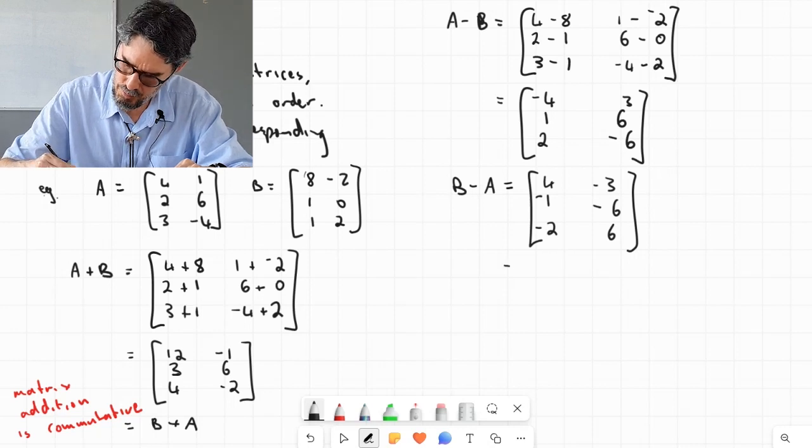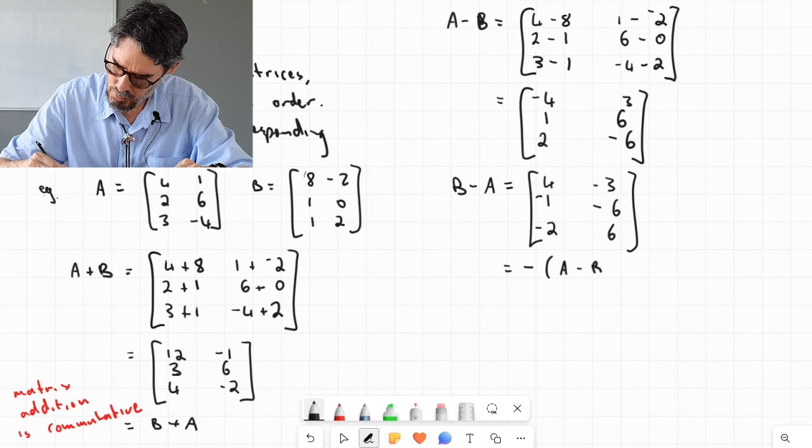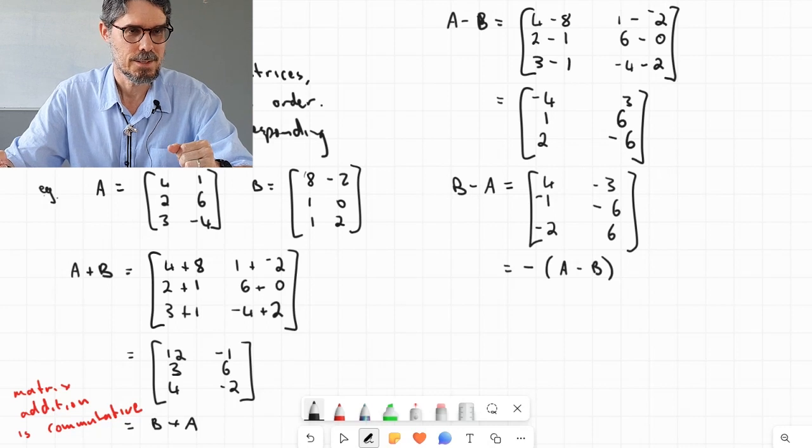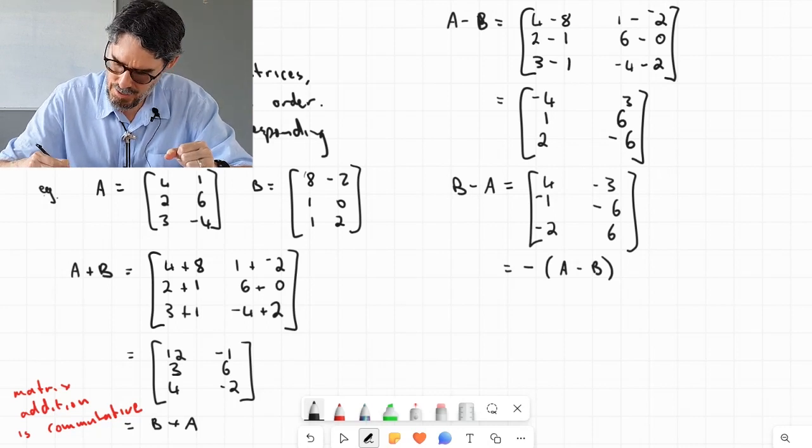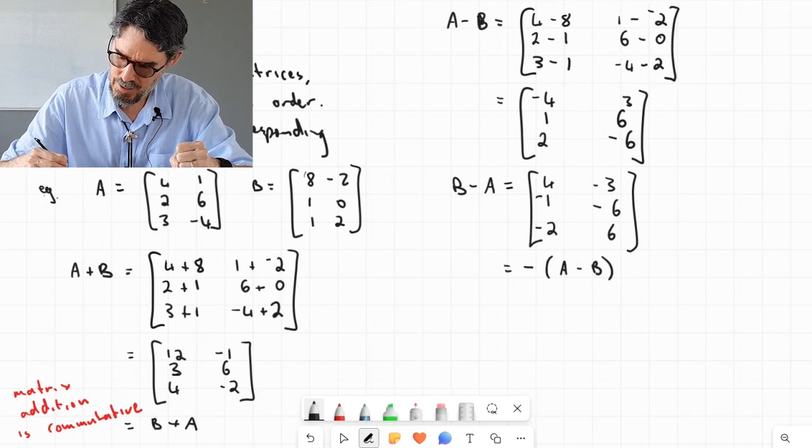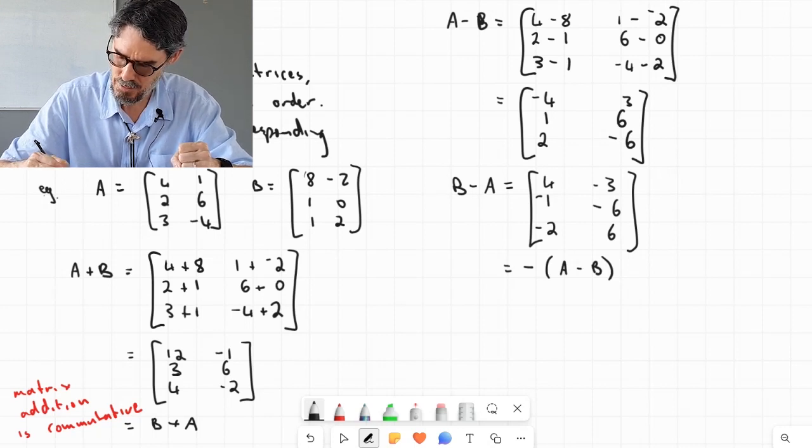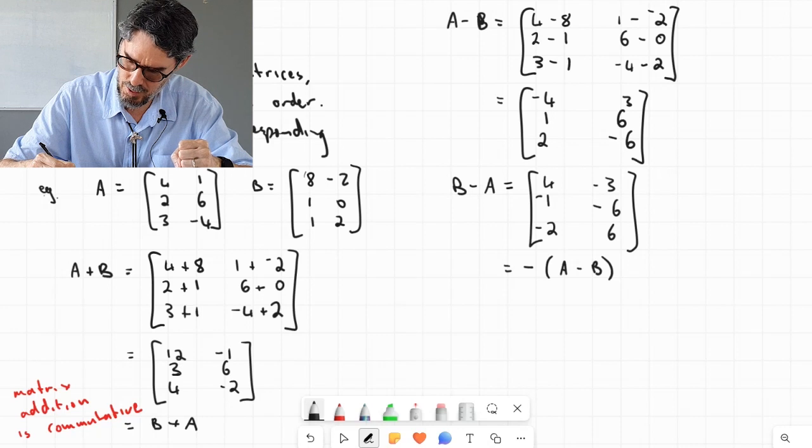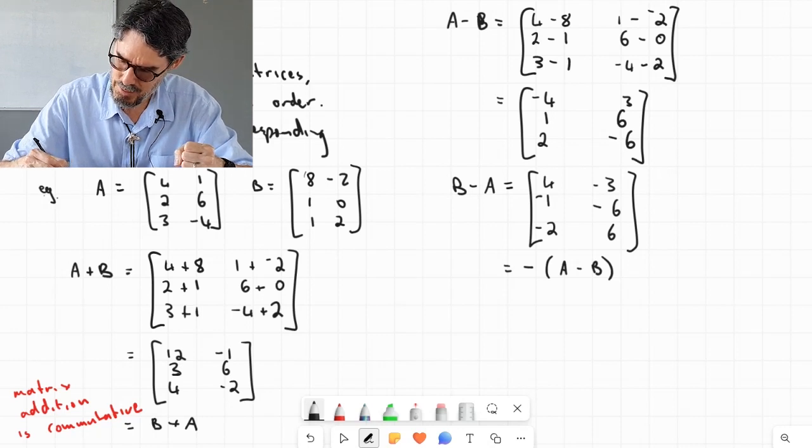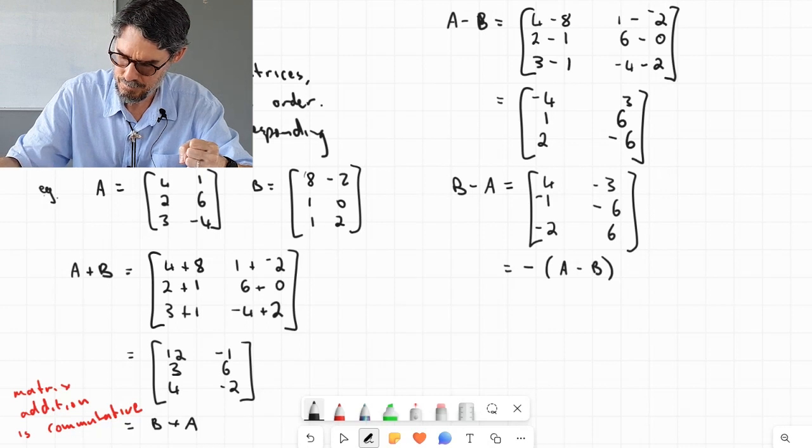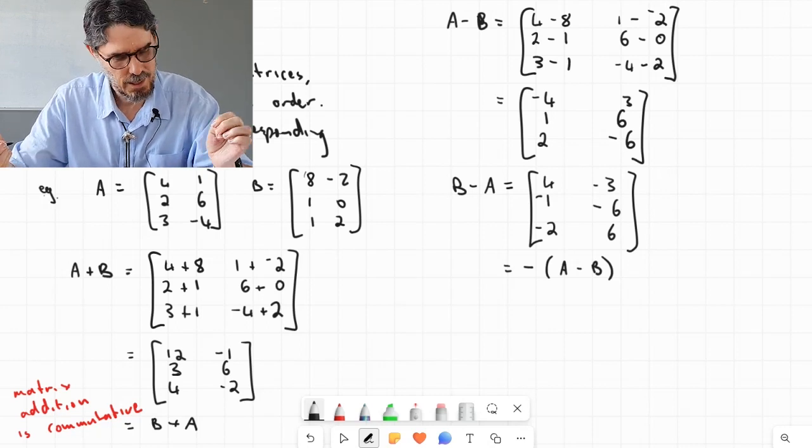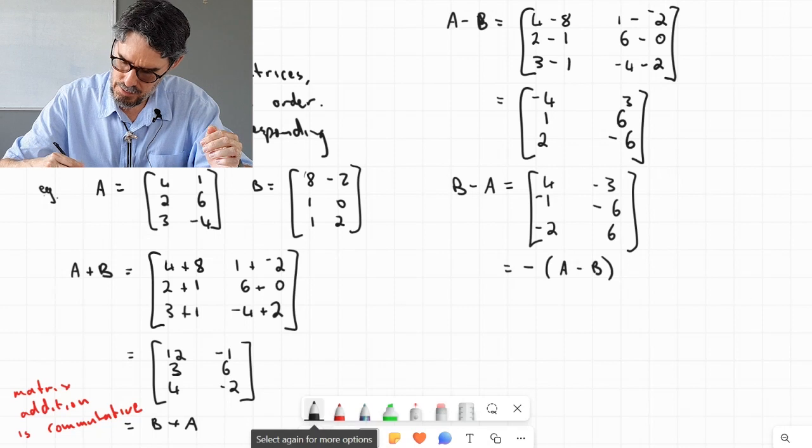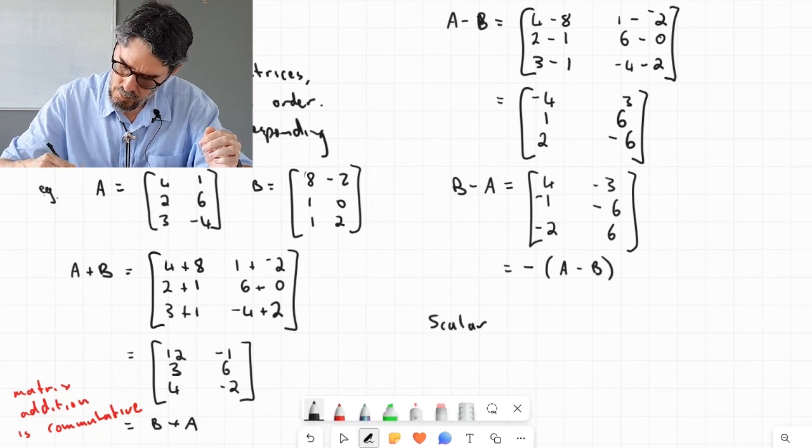Notice what happened. B minus A is the negative of A minus B. Actually, we've just done the next thing I'm going to show you already there: scalar multiplication. When I say negative of A minus B, I mean I'm going to negate every individual element of that matrix. I'm multiplying the matrix A minus B by negative 1, and I do that by multiplying every element inside by negative 1. So this is the same result as you will get with normal scalar arithmetic. Just to clarify that, let's talk about scalar multiplication.